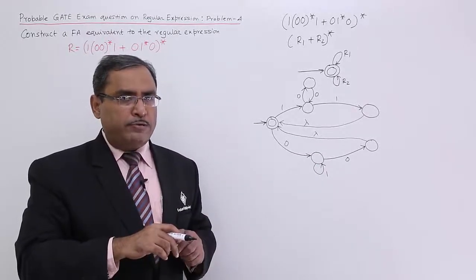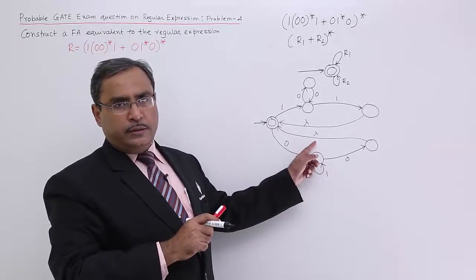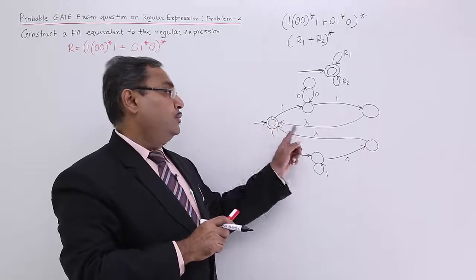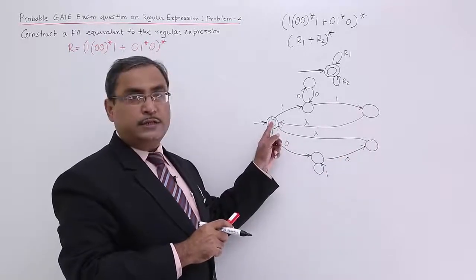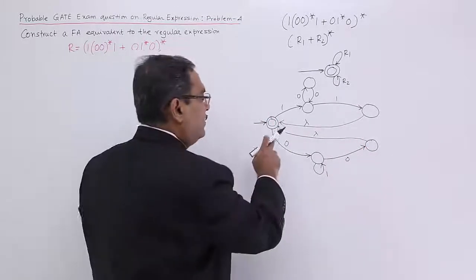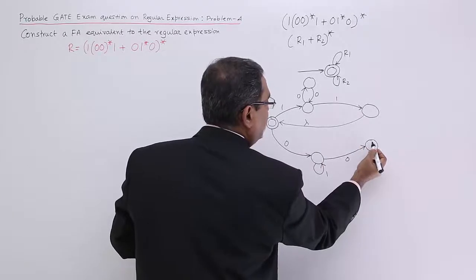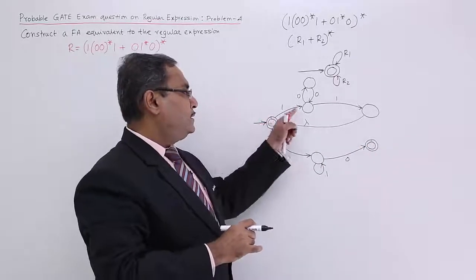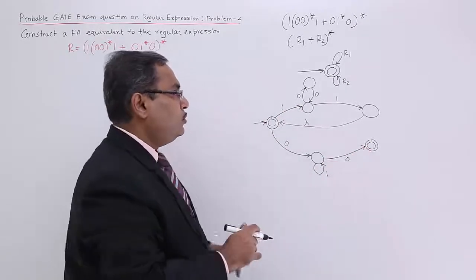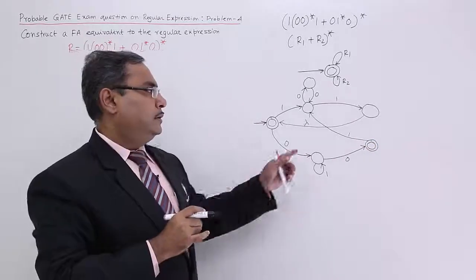We know that lambda transition elimination rules are there. If you want to eliminate a lambda transition, then if it is the initial state, I shall have to make this one the initial state. It is not an initial state, so I should not make this one an initial state. If it is the final state, then I shall have to make this one final. So if I want to eliminate this lambda transition here, I shall have to make this one a final state and all the edges going out from here should also be drawn from this particular state.